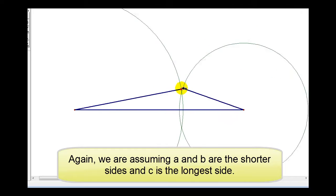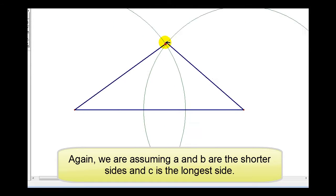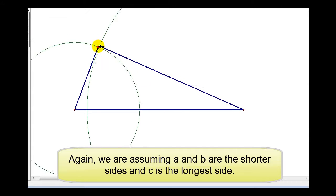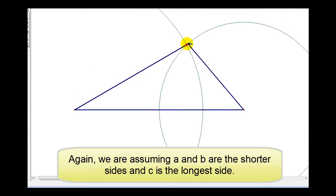So, in order to form a triangle, A plus B must be greater than C, where C is the longest side of the triangle.